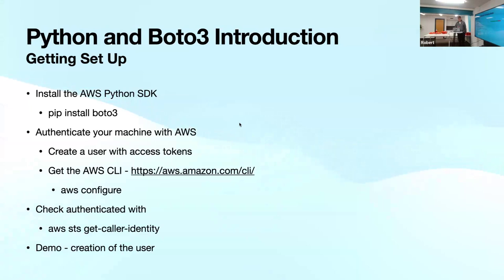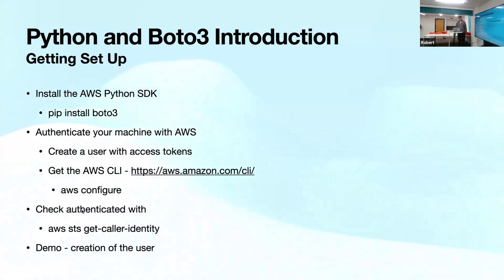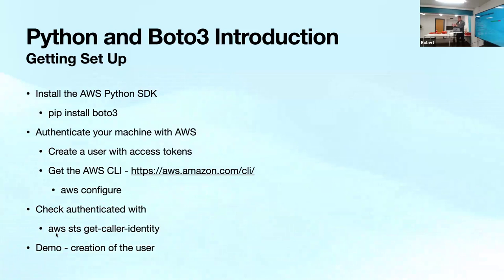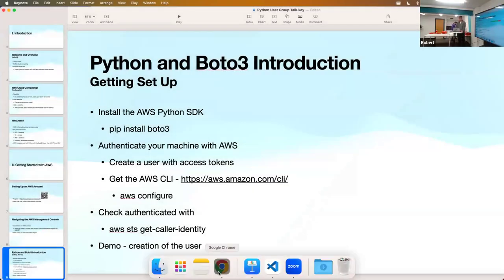For Python and boto3 setup: install the AWS Python SDK with 'pip install boto3'. You then authenticate your machine with AWS by creating a user with access tokens. I recommend getting the AWS CLI so you can run 'aws configure', which prompts for your user tokens. You can then check you're authenticated with 'aws sts get-caller-identity'. The CLI is structured as: aws, service name, then method name - so in this case it's AWS Secure Token Service, then get-caller-identity. I'll give you a demo of creating the user.